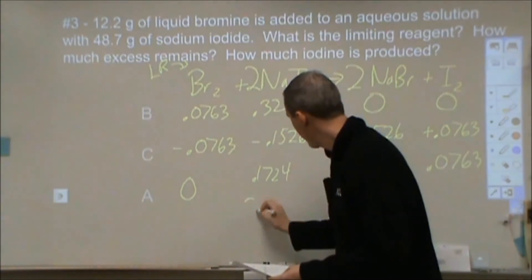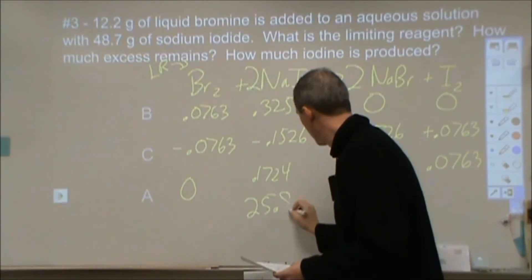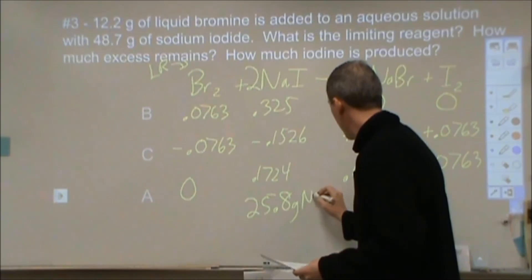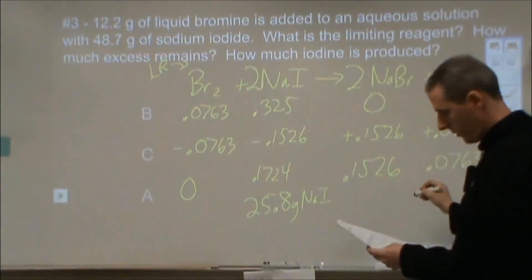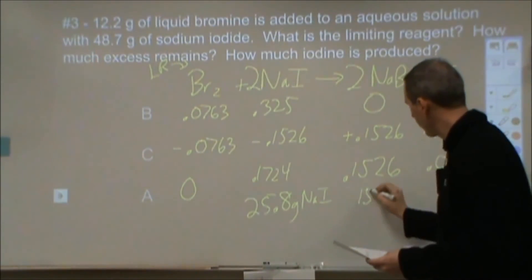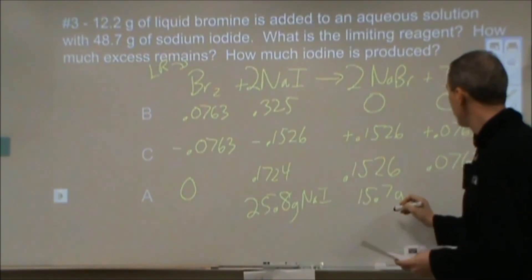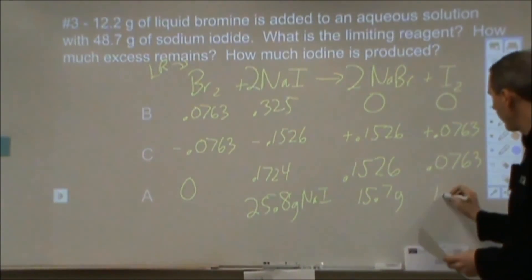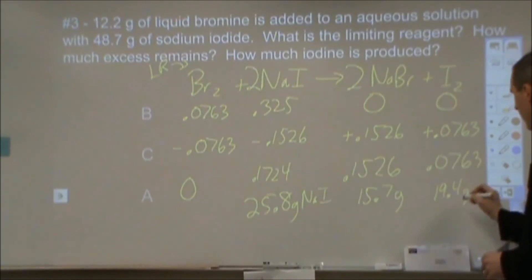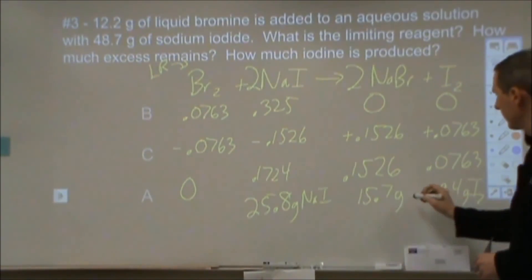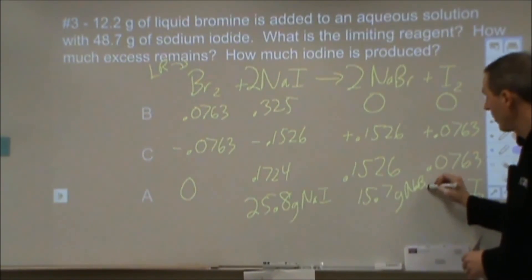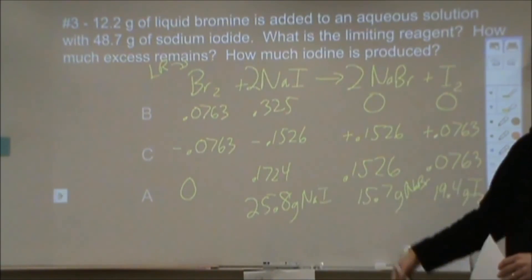In grams, that would be 25.8 grams of NaI. We would have 15.7 grams of sodium bromide, and 19.4 grams of iodine. And of course, each one of those, I'm just multiplying that by their molar mass.